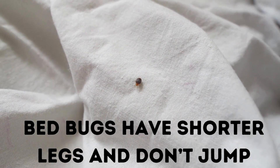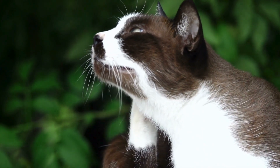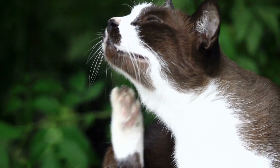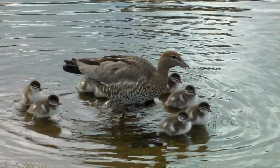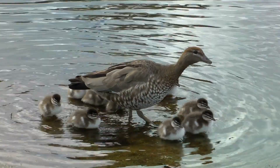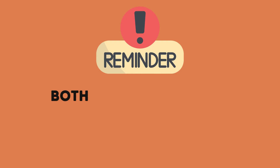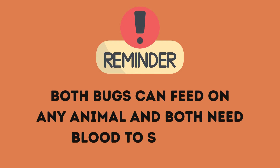Common bed bugs prefer to feed on humans, whereas fleas are more host-specific to certain animals. For example, the cat flea feeds on cats, whereas the duck flea would prefer ducks. Both bugs can feed on any animals, though, including humans. And both bugs need blood to survive.